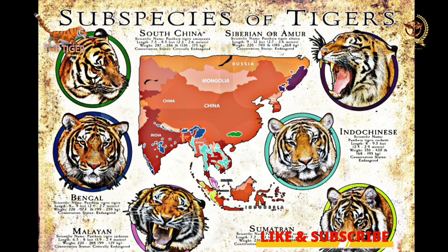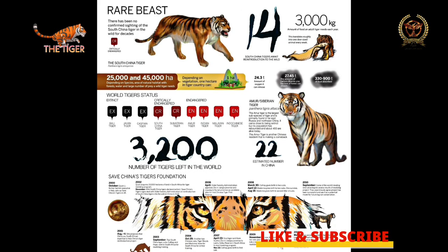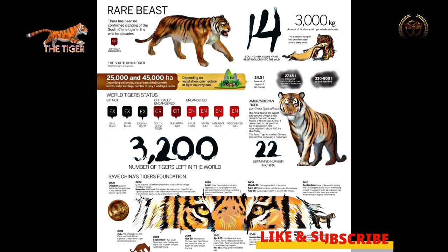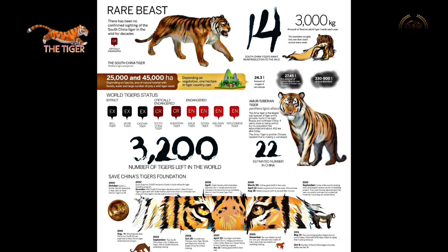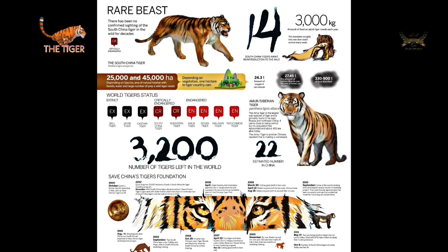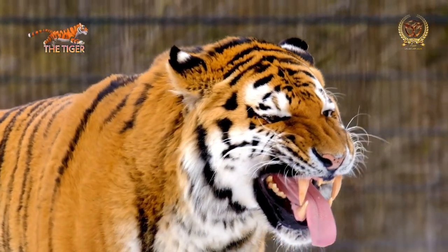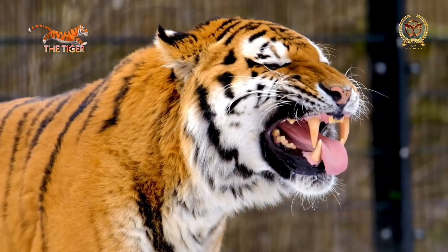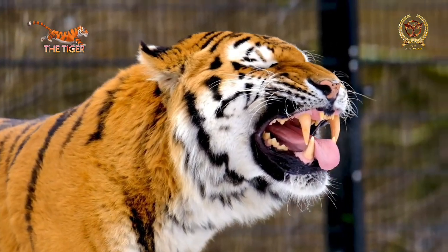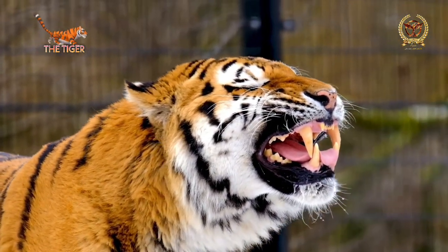Several subspecies of the tiger are distinguished based on fur length and color, stripe patterns, and body size, so characteristics vary widely within their populations. Gene evolution between tiger populations from different regions during the Pleistocene gave rise to two subspecies: Panthera tigris tigris in mainland Asia and Panthera tigris sondaica in the greater Sunda Islands.